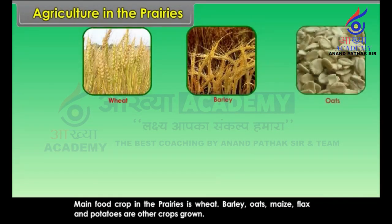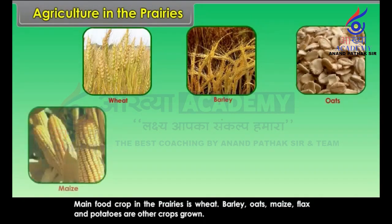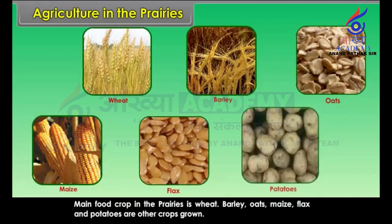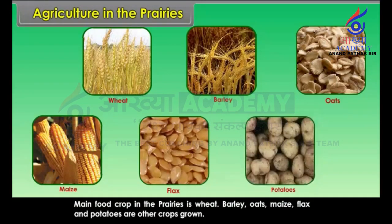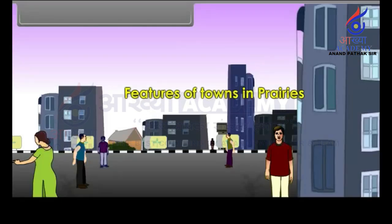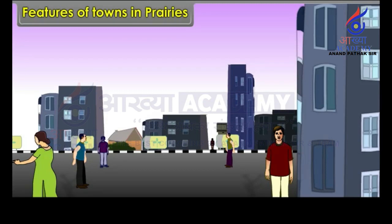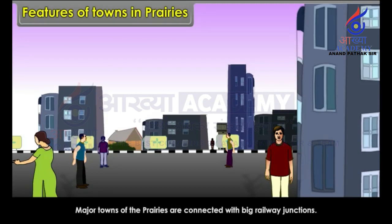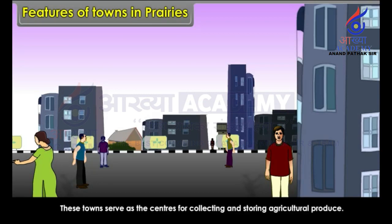The main food crop in the Prairies is wheat. Barley, oats, maize, flax, and potatoes are the other crops grown. Major towns of the Prairies are connected with big railway junctions. These towns serve as the centers for collecting and storing agricultural produce.